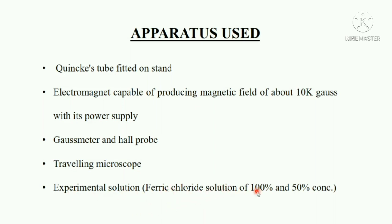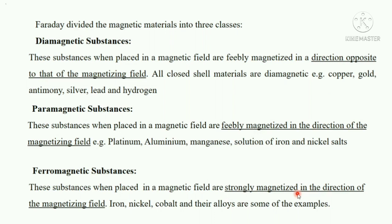The experimental solution in our case is ferric chloride solution of 50 percent and 100 percent concentration. Faraday divided the magnetic materials into three classes. The first are diamagnetic substances — these are substances which, when placed in a magnetic field, are feebly magnetized in a direction opposite to that of the magnetizing field. Examples include copper, gold, antimony, silver, lead, and hydrogen.